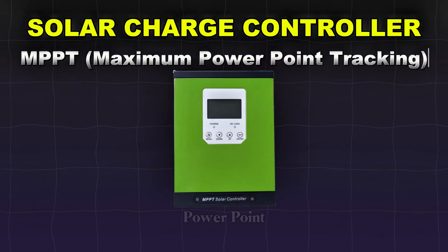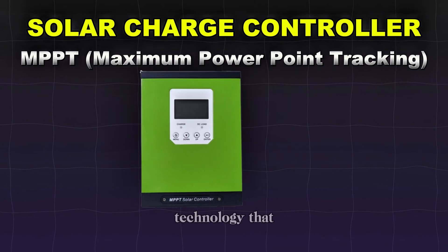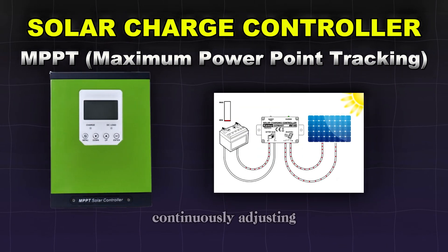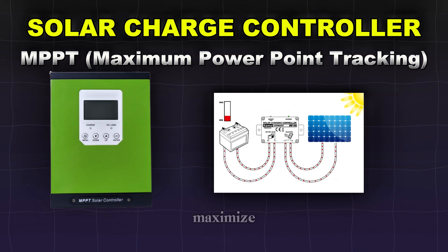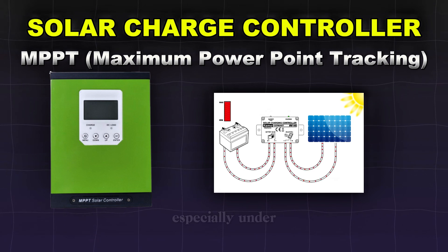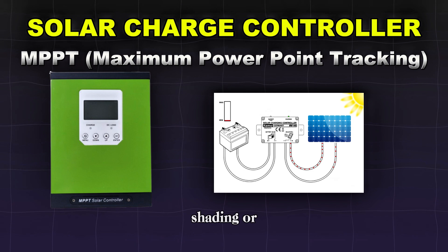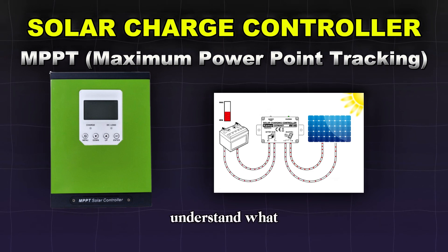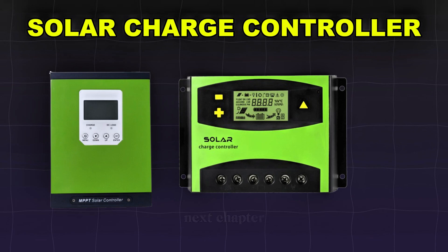MPPT, maximum power point tracking, is a technology that optimizes the power output from solar panels by continuously adjusting their operating point to maximize energy capture, especially under varying conditions like partial shading or changing sunlight intensity. So now that you understand what a charge controller is, let's go to the next chapter.